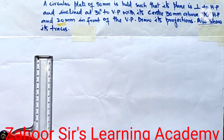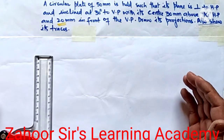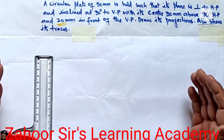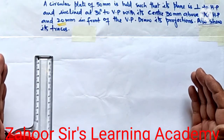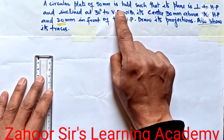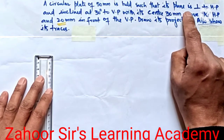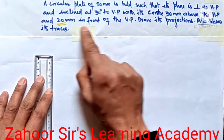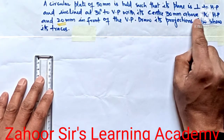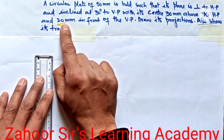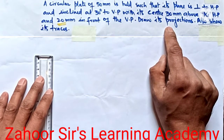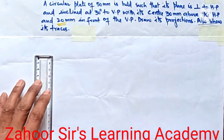Assalamu alaikum, my dear students. In today's class I'm going to teach you how to draw the projection of a plane. The problem is: a circular plate of 50 mm diameter is held such that its plane is perpendicular to HP and inclined at 30 degrees to VP, with its center 30 mm above the HP and 20 mm in front of VP. Draw its projections and also show its traces.